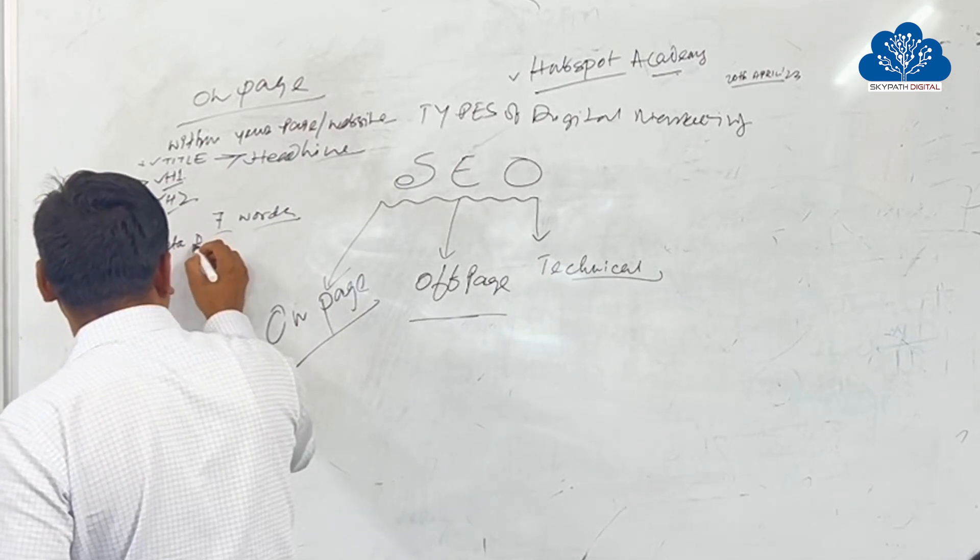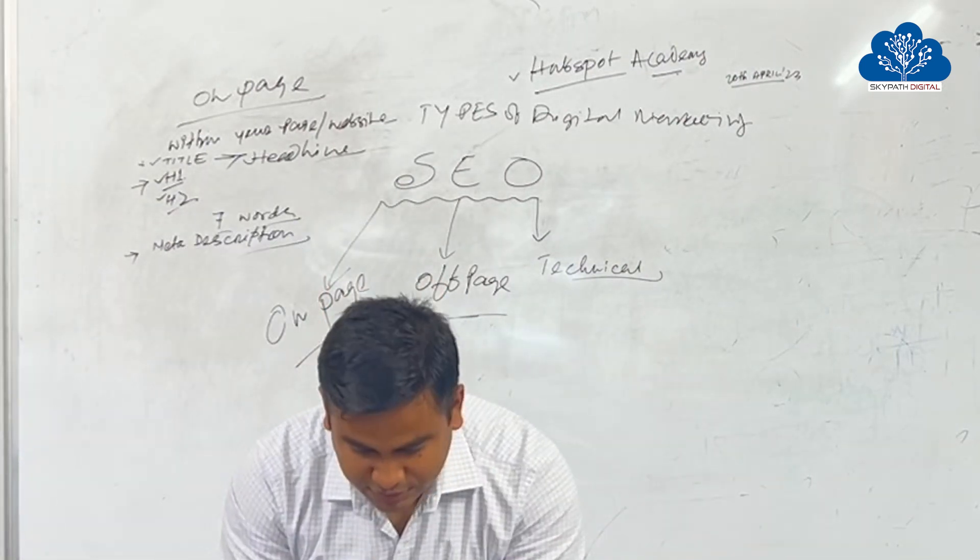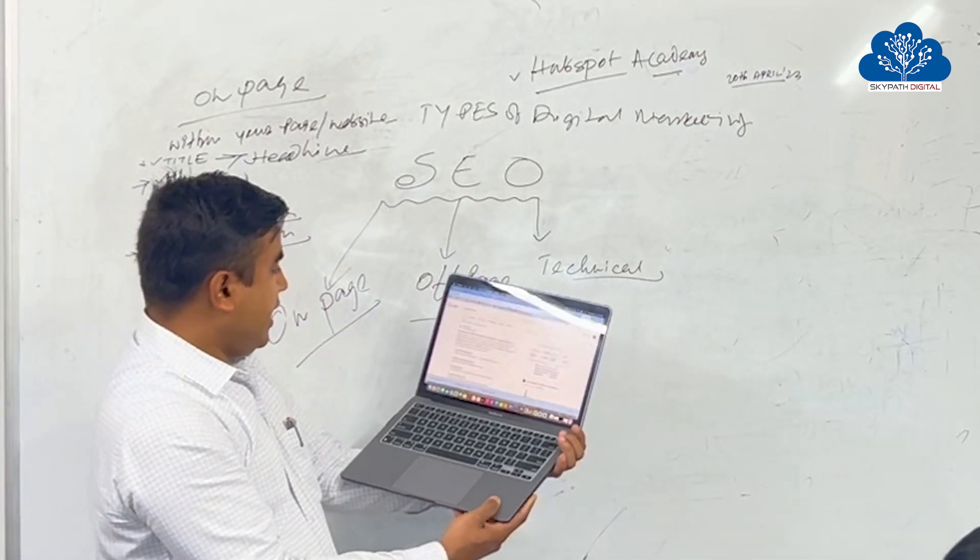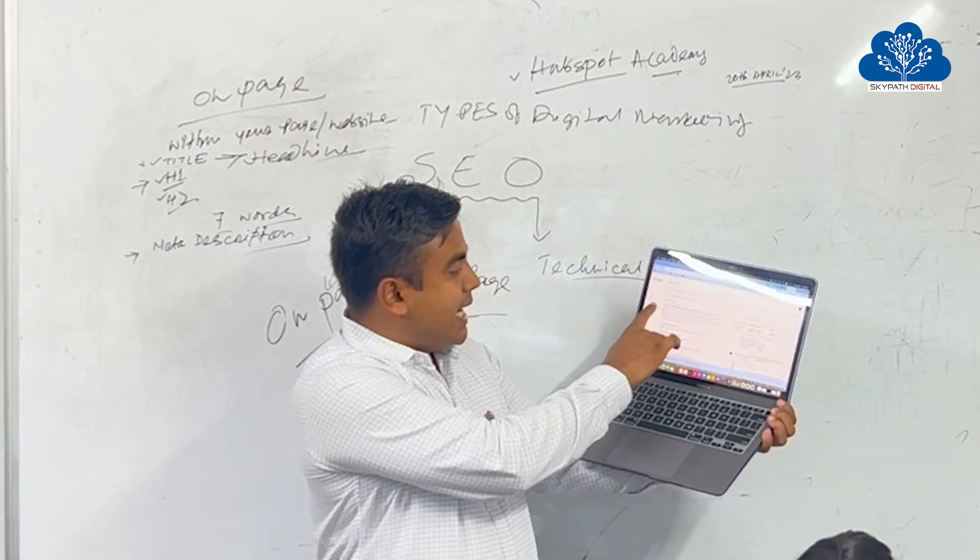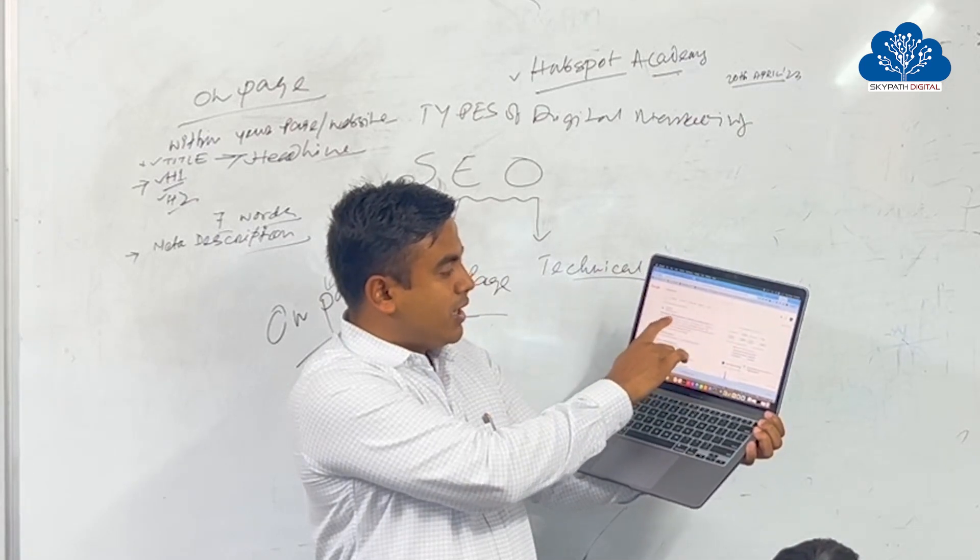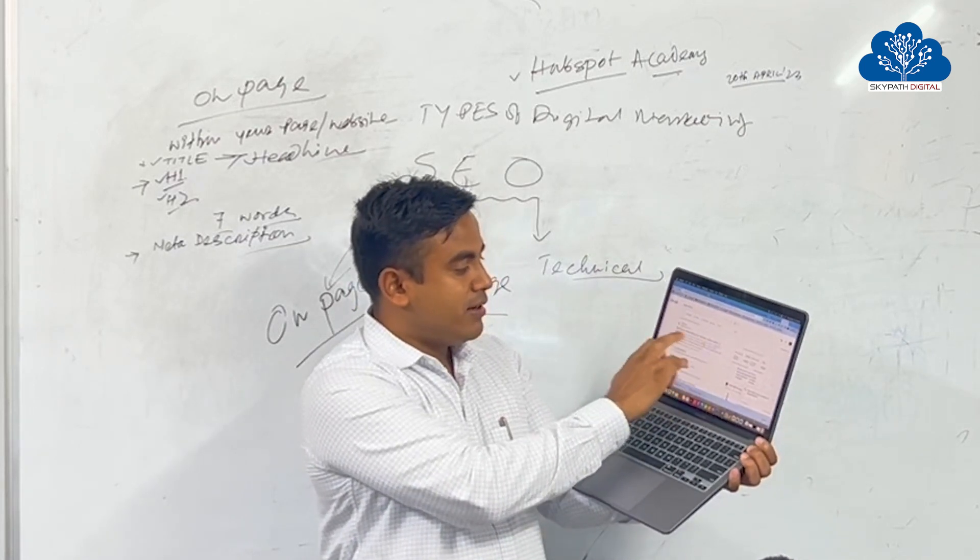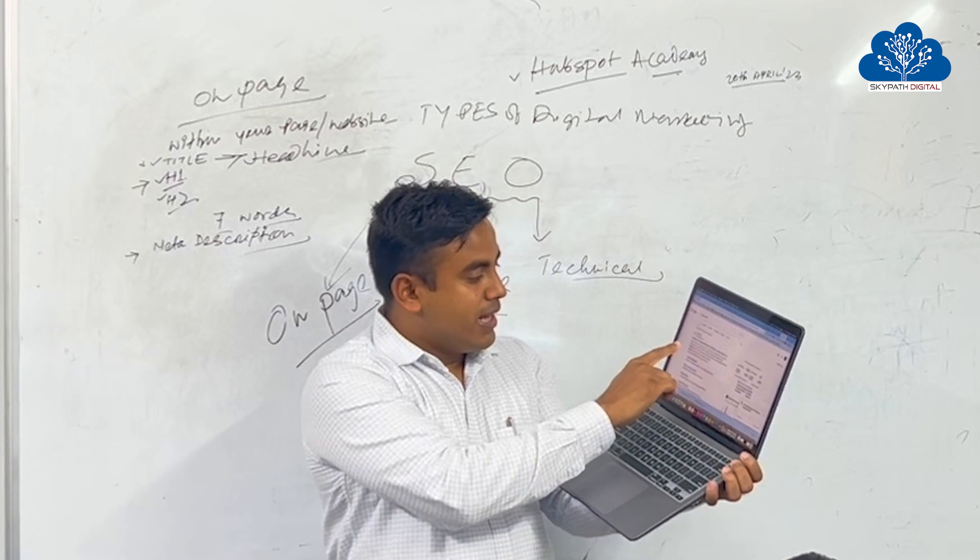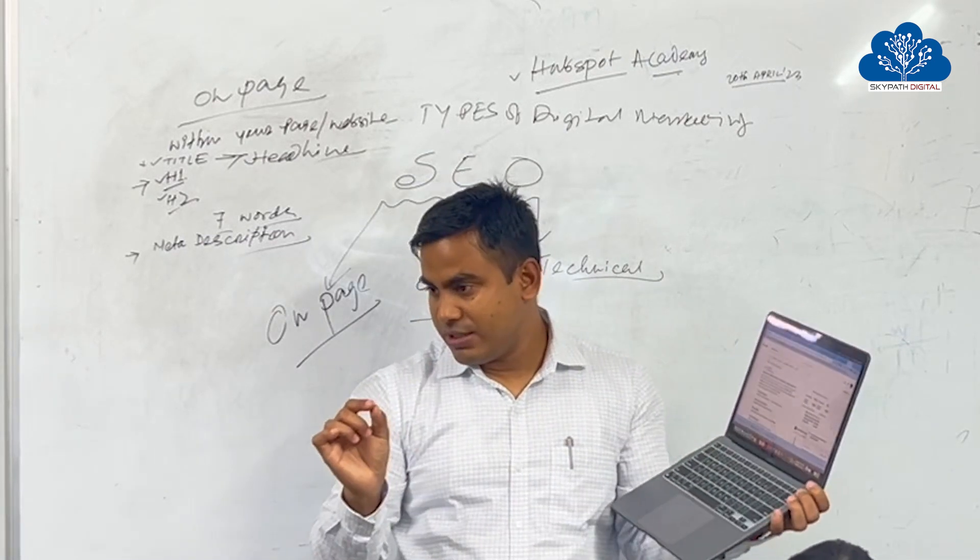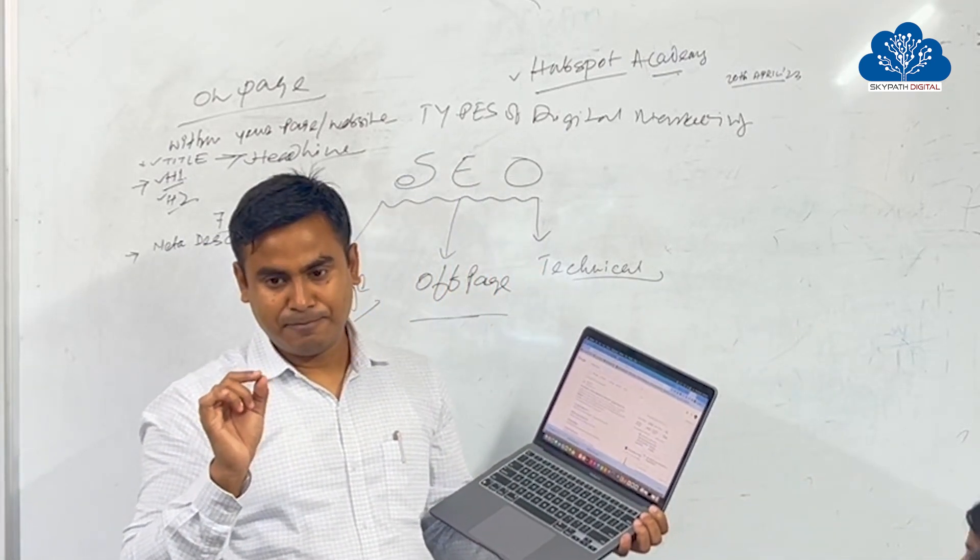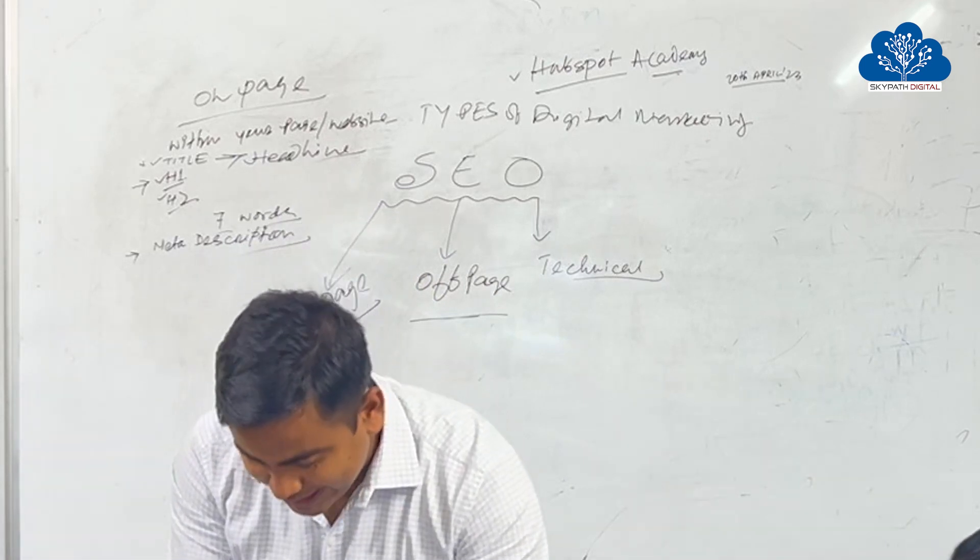Then the title, H1, H2, then in on-page is called the meta description. The meta description part is nothing but, see in on-page, this is the page, this is the headline. Buzz Sumo, media mentors in a minute, and then ideas. This is the H1 headline or title, right? Then below the title there is a description of your page, that is called the meta description. Small introduction of your page, that is very, very important.